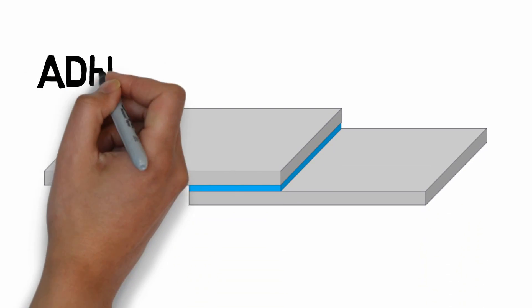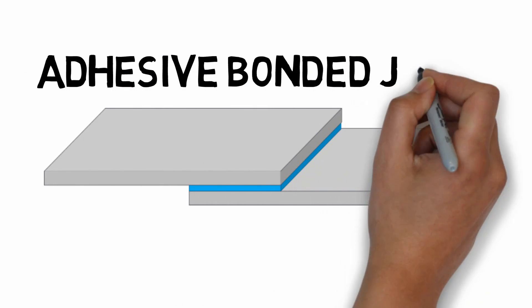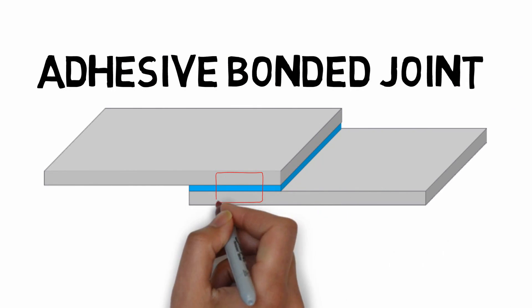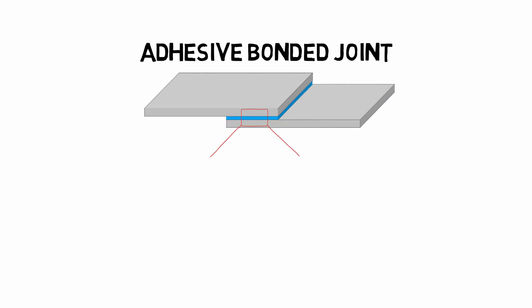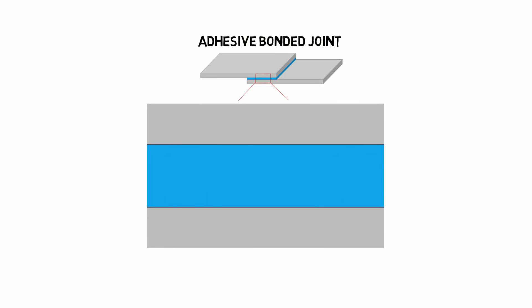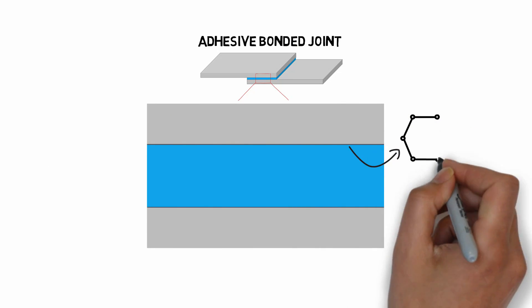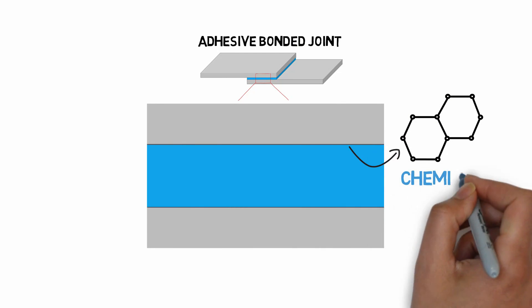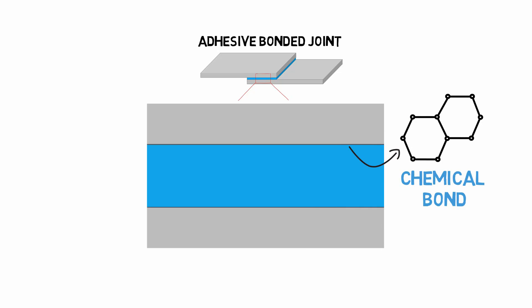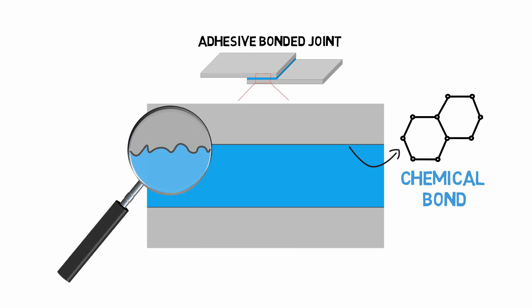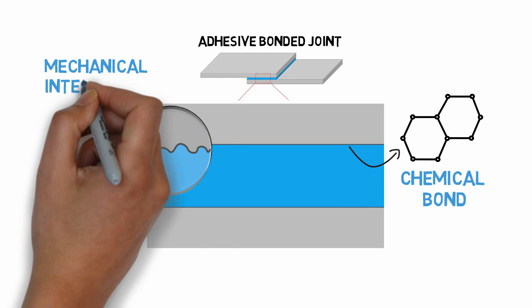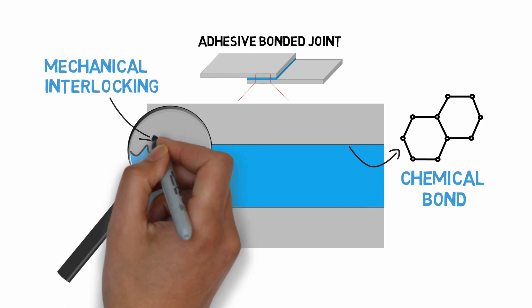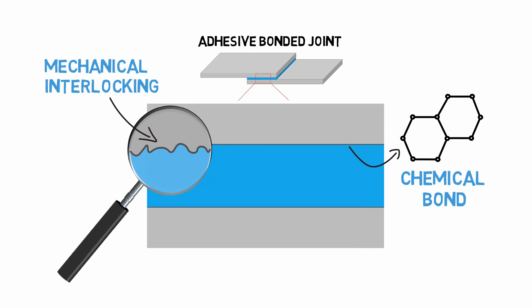An adhesive bonded joint relies on an adhesive material to join the two parts together. If we look closely at how this adhesive material connects to the parts it is joining, we can see that two different mechanisms for transferring load come into play. First, the adhesive material forms a chemical bond with the part it is joining. These chemical bonds and their strength will be dependent on the bonding process and the compatibility of the adhesive and joining material. Second, the adhesive material will flow into the nooks and crannies of the microscopically rough surface to be joined, and will then mechanically interlock with this surface roughness, allowing some load transfer through mechanical interlocking.